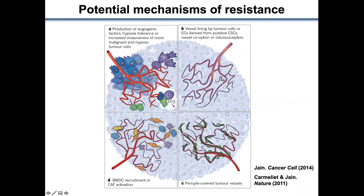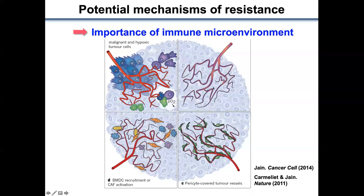However, the survival benefit from these drugs is quite disappointing in practice because tumors develop resistance. There have been a couple of potential mechanisms of resistance proposed. Given the recent huge success of cancer immunotherapy and the era of cancer immunology, emerging data show that the immune system also plays a critical role in the resistance to anti-angiogenic therapy. So today, I'm going to focus on the role of immune cells in the resistance process.